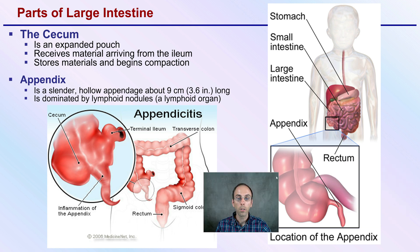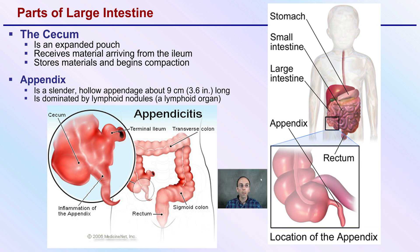Parts of the large intestine include the cecum and the appendix. The cecum is an expanded pouch that receives materials arriving from the ileum — the end part of the small intestine — and it stores materials and begins the compaction process. The appendix, located right below, is a slender hollow appendage only about 9 centimeters or 3.5 inches long, dominated by lymph nodes. We may be familiar with appendicitis, which is basically food that gets trapped there and can cause potential issues.